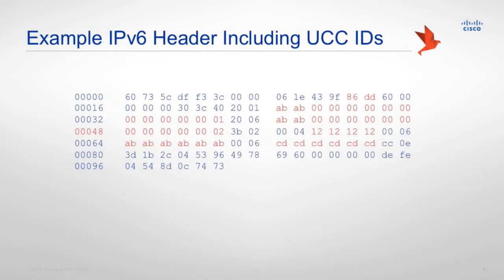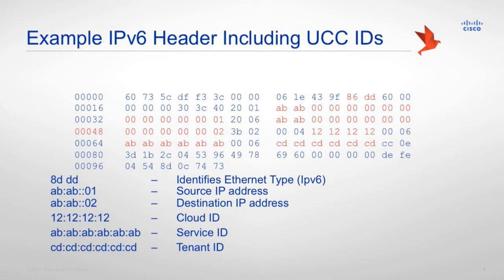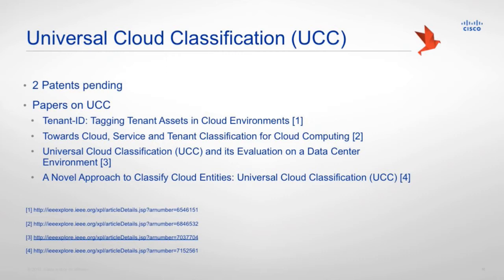Just to give a brief overview, this is a typical IPv6 header. Most of the fields are known; the new ones are the cloud ID, which is four bytes long, and then the service ID and the tenant ID — giving you the required identifiers in that IPv6 packet that can then be used for certain applications. At the moment, we have two patents pending for that proposal and we also have a couple of research papers presented at different academic and industry conferences.